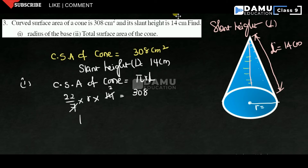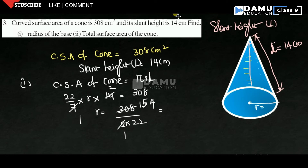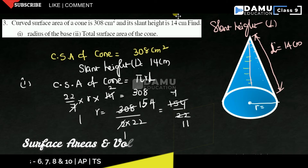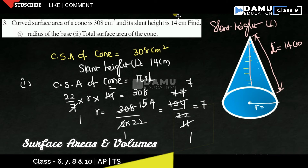Simplifying: 7 cancels with 14 to give 2. So R = 308 ÷ (2 × 22) = 308 ÷ 44 = 154 ÷ 22 = 7 cm. Therefore, the radius of the base equals 7 cm.